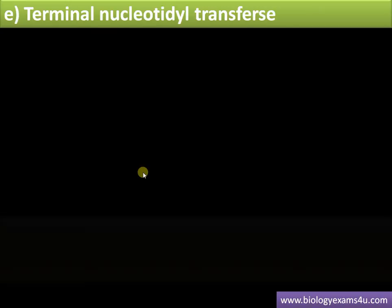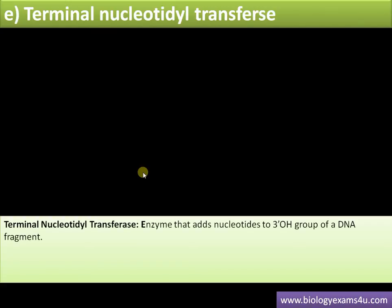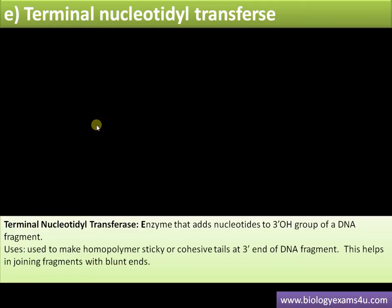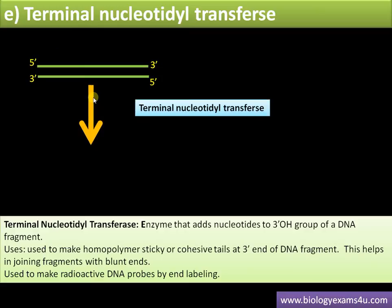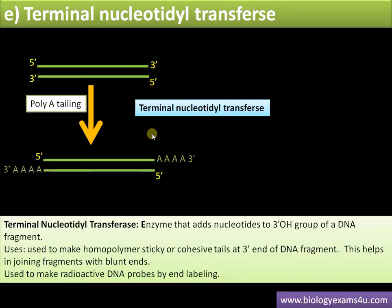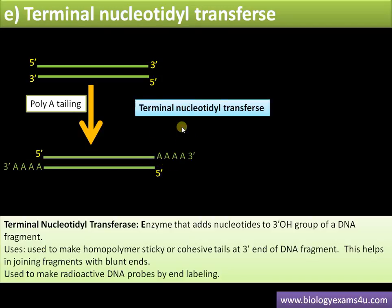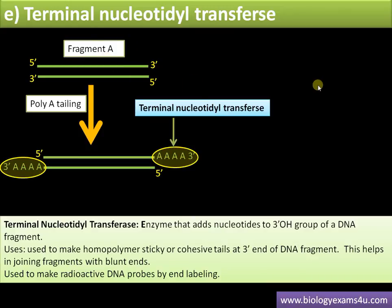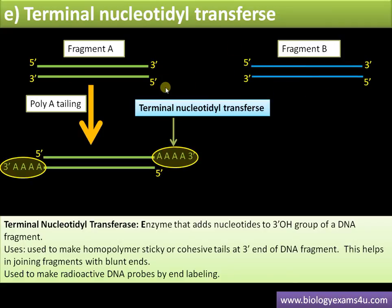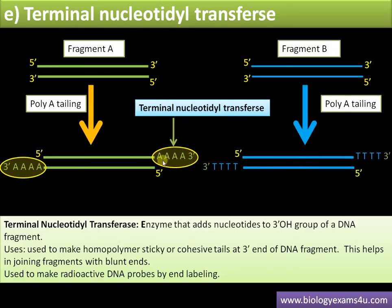The next enzyme is terminal nucleotidyl transferase. This enzyme adds nucleotides to the 3'-OH group of a DNA fragment and is used in homopolymer tailing to make blunt ends sticky, facilitating the joining of blunt-end fragments. It is also used in radio labeling. For example, if fragment A and fragment B both have blunt ends, terminal nucleotidyl transferase adds a poly-A tail to one fragment and a poly-T tail to the other, making them complementary and sticky so they anneal easily.